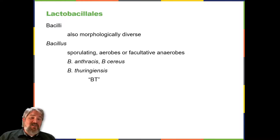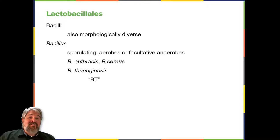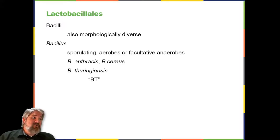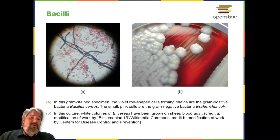Two notable pathogens belong to the genus Bacillus. Bacillus anthracis is the pathogen that causes anthrax, a severe disease affecting wild and domesticated animals that can spread from infected animals to humans. Anthrax manifests in humans as charcoal-black ulcers on the skin, severe enterocolitis, pneumonia, and brain damage due to swelling. If untreated, anthrax is lethal. Bacillus cereus, a closely related species, is a pathogen that may cause food poisoning; it is a rod-shaped species that forms chains, and colonies appear milky white with irregular shapes when cultured on blood agar.